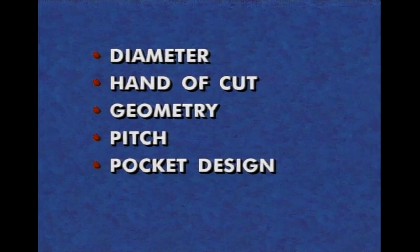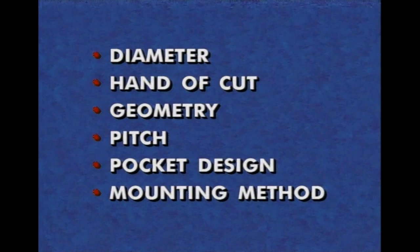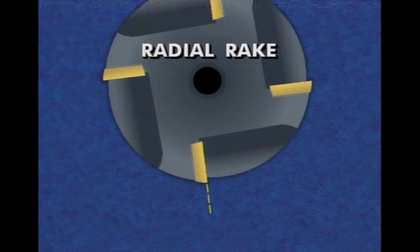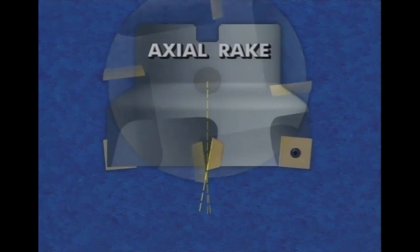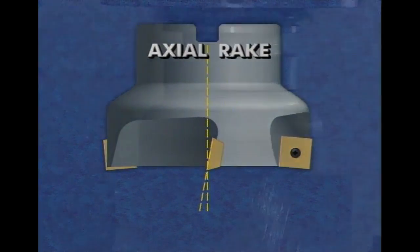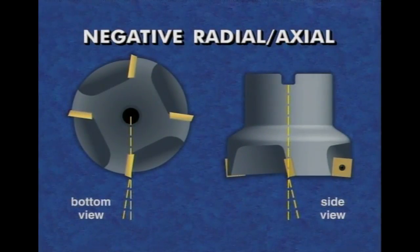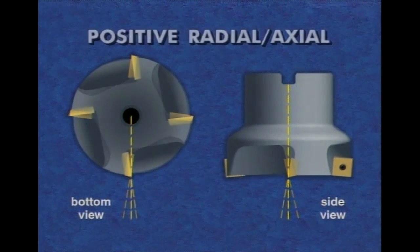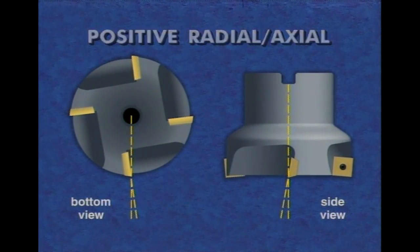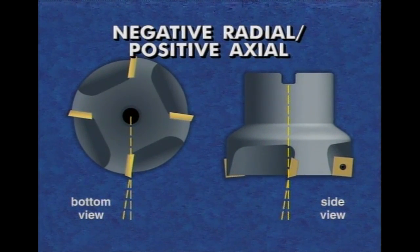The two rake angles determined by face milling cutter bodies are the radial rake and the axial rake. These two may combine in three ways for three different geometries of face mills: negative radial and axial, positive radial and axial, and negative radial positive axial.